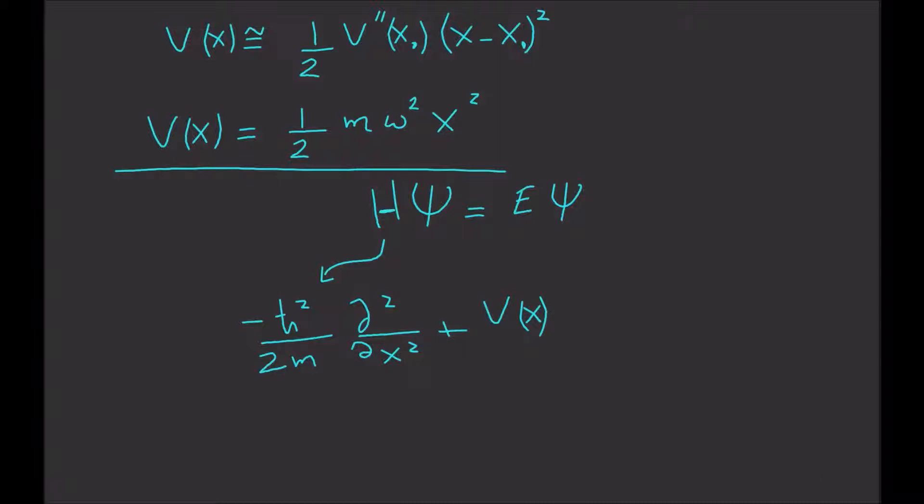Now plugging this back here, we have the Schrödinger equation: minus ℏ² divided by 2m times the second derivative of ψ with respect to x, plus one-half...